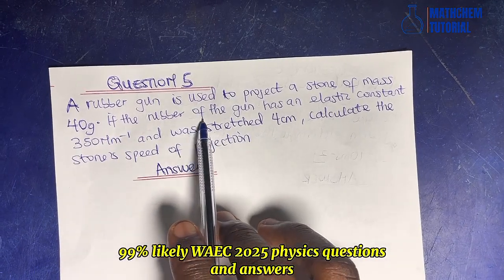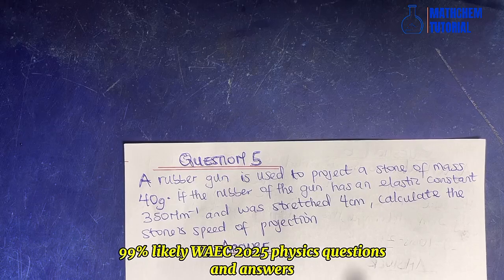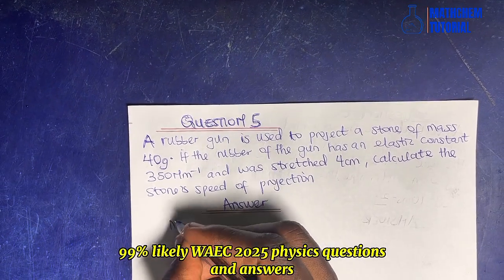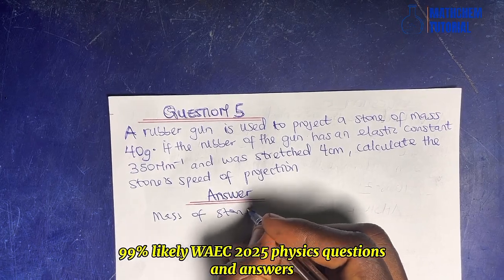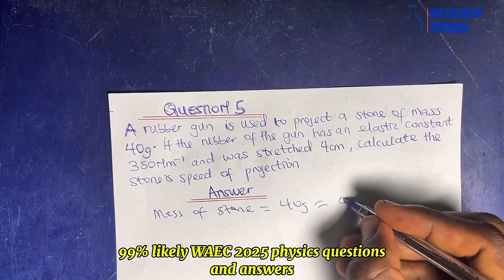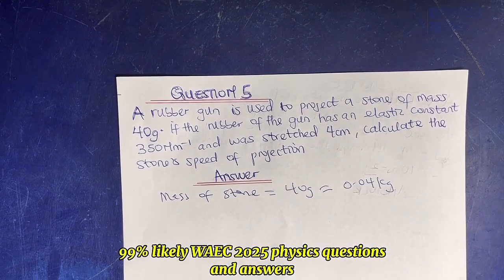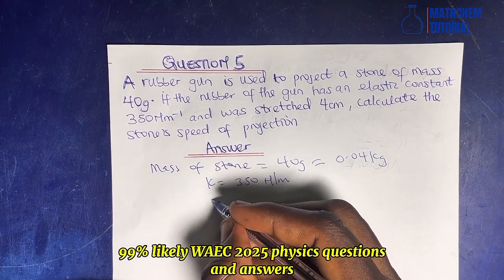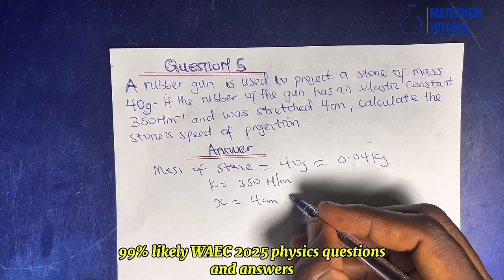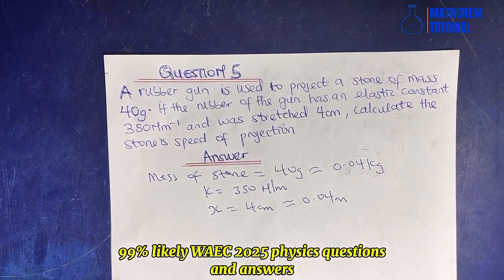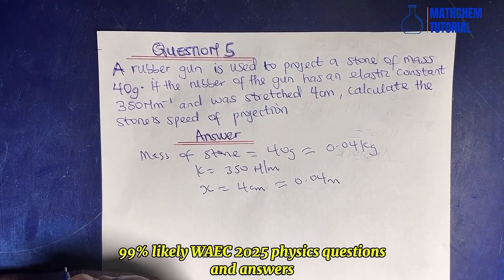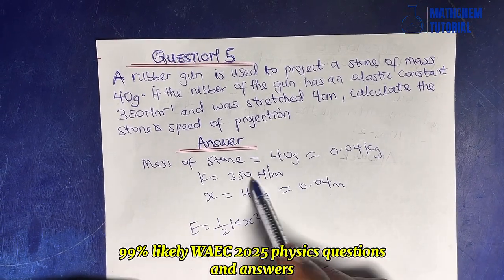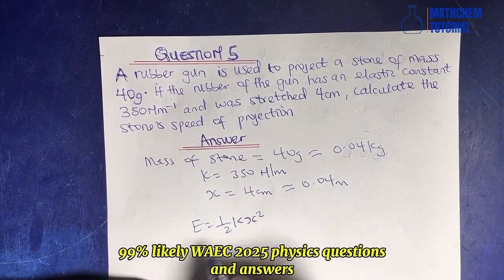Question five: a rubber gun is used to project a stone of mass 40 grams. The elasticity constant k = 350 N/m and the extension x = 4 cm = 0.04 m. The mass of the stone is 0.04 kg.